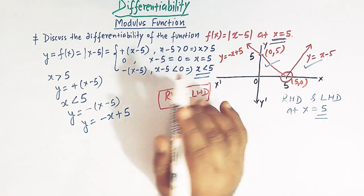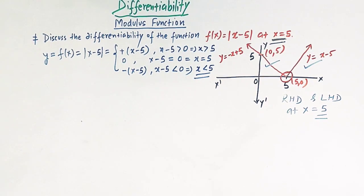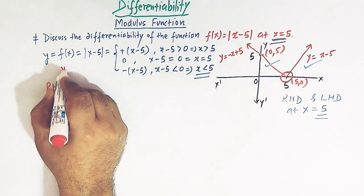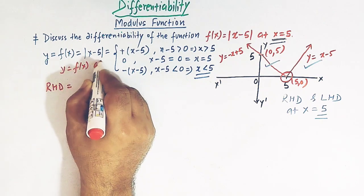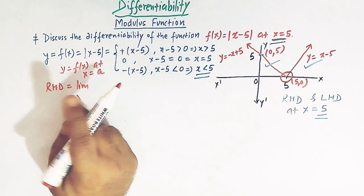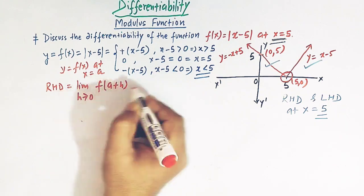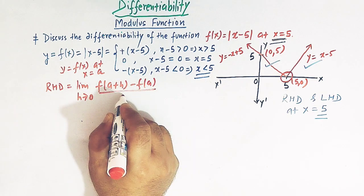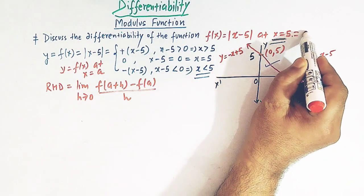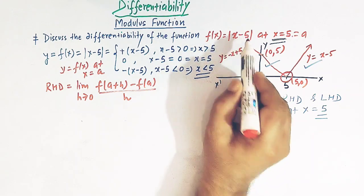For a function to be differentiable, the right hand derivative and the left hand derivative must exist, must be finite, and both must be equal. Then we can say the function is differentiable. Here a = 5 and f(x) = |x - 5|.